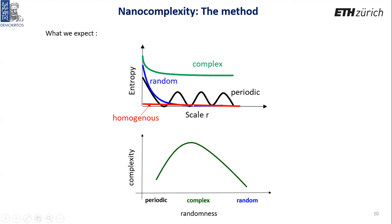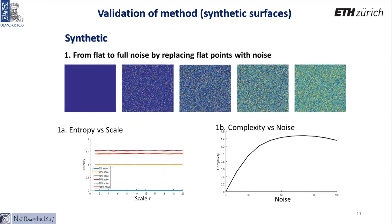At each scale, we calculate the entropy of the mass field to quantify homogeneity and heterogeneity, then average this entropy over all scales — defining the complexity of the nanomorphology. For fully random and fully periodic surfaces, entropy drops rapidly; for complex morphologies, entropy decreases at a much slower rate, yielding a higher average. The maximum complexity is thus found at the complex cases.